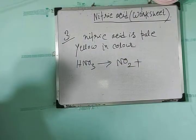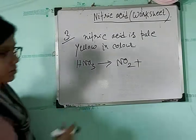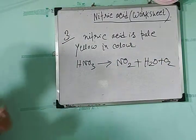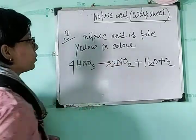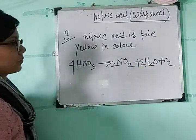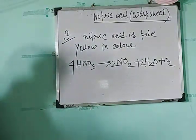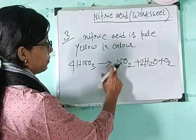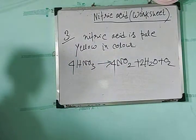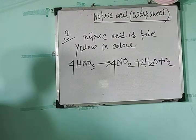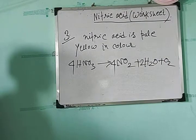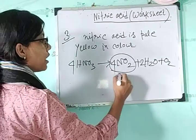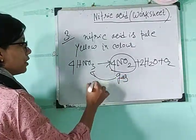The dissociation produces nitrogen dioxide, water, and oxygen. The balanced chemical equation is: 4HNO₃ → 4NO₂ + 2H₂O + O₂. So four molecules of nitric acid produce four molecules of nitrogen dioxide, two water molecules, and one oxygen molecule. That is the dissociation of nitric acid.